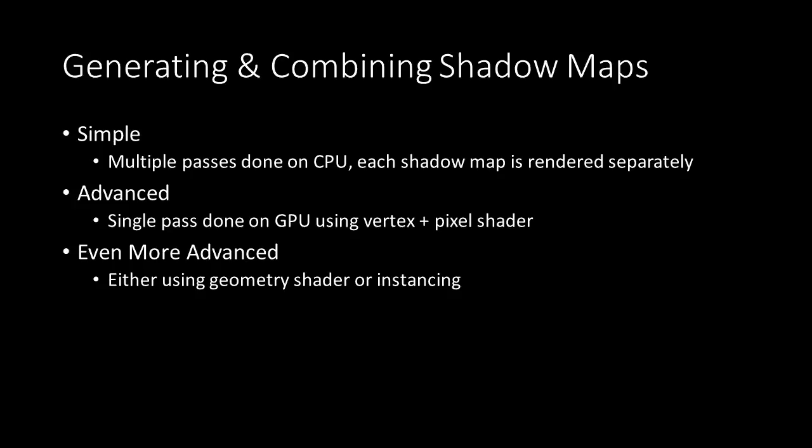The third and fourth steps are generating and combining shadow maps. The simple method runs multiple CPU passes — first rendering the near shadow map, then farther, then farthest, then combining them. A more advanced method does a single pass using vertex and pixel shaders to sample those maps in the same pass. There's an even more advanced method using a geometry shader or instancing to do the same thing, which would perform best, but I may not have time to implement it.